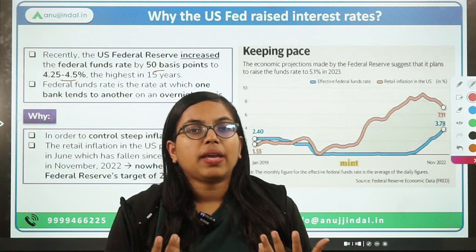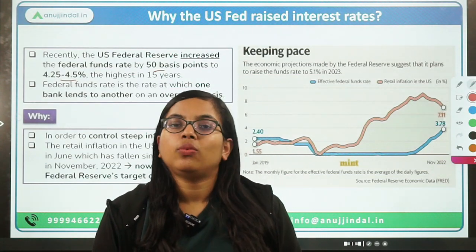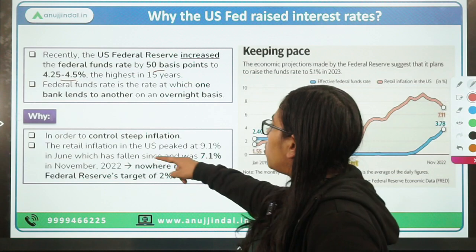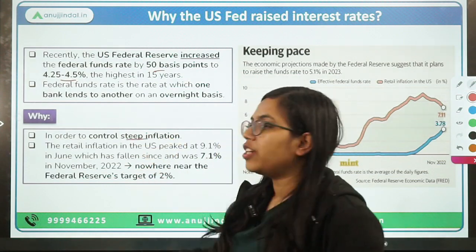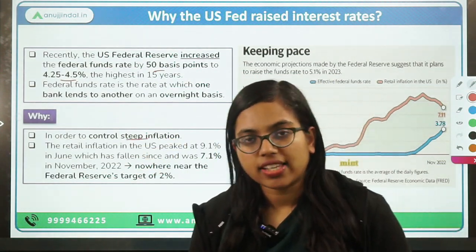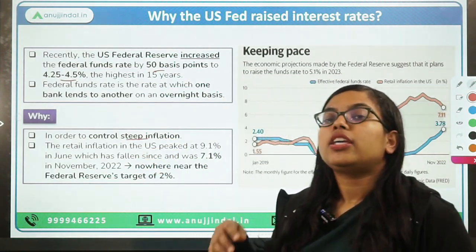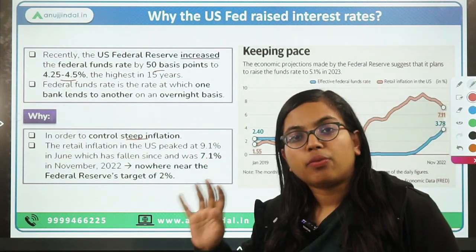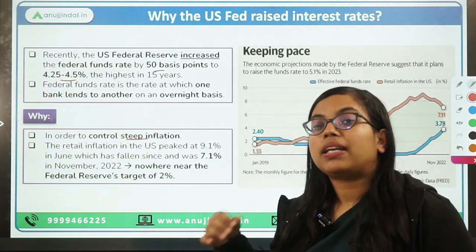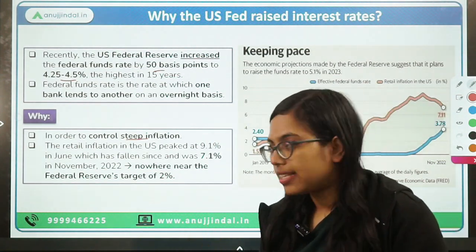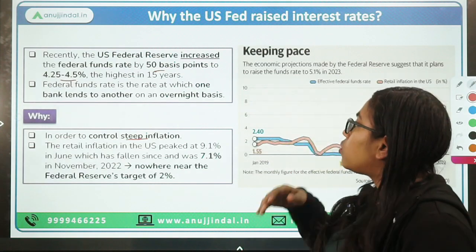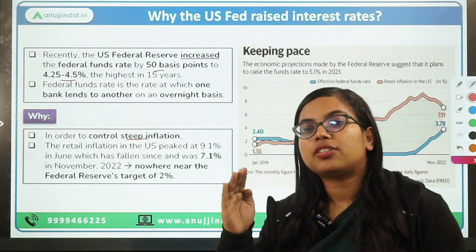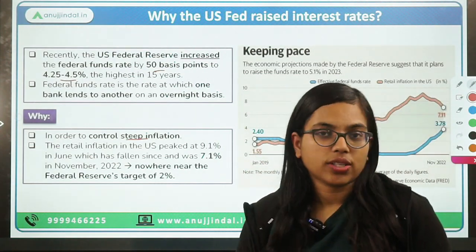The main answer everyone would give would be inflation. In order to control the steep inflation that the US economy is facing, the US Federal Reserve has increased the policy rate. But apart from that, there are other reasons as well. Before understanding those, let us first understand the inflation level in the US economy.